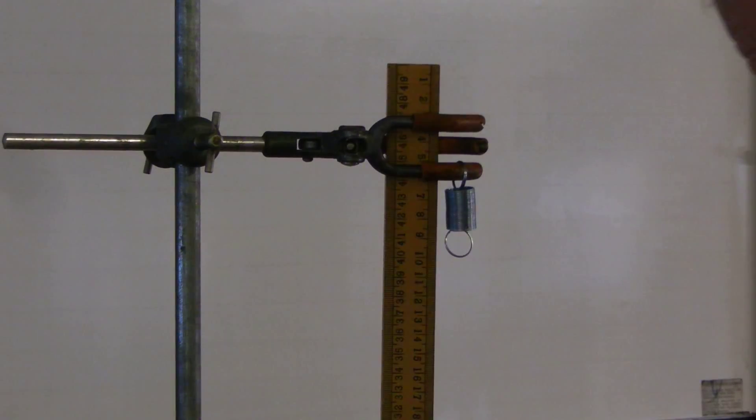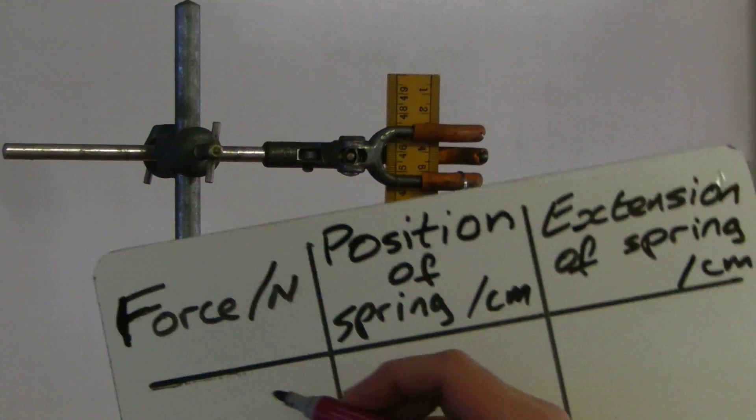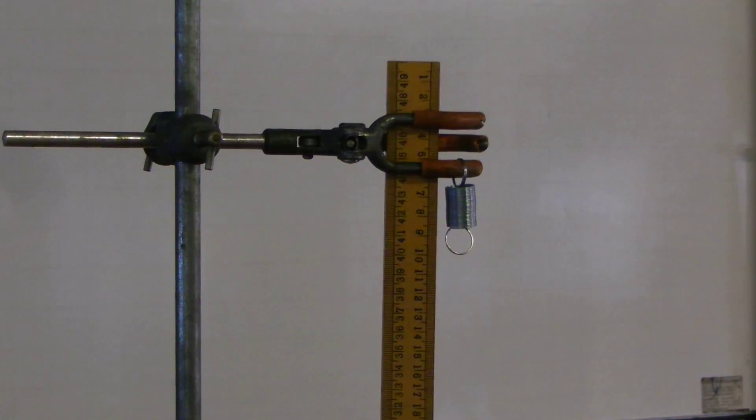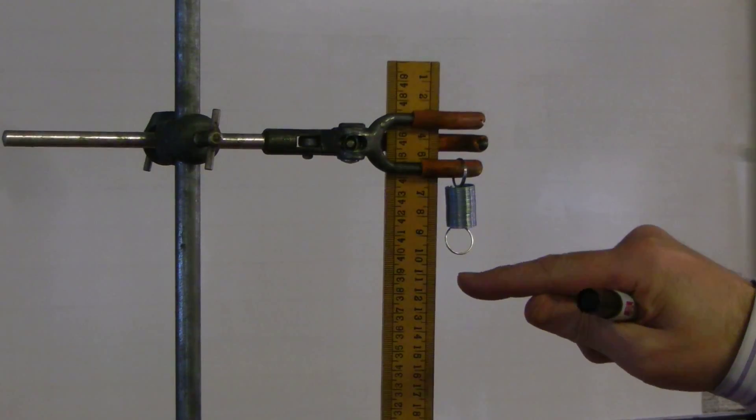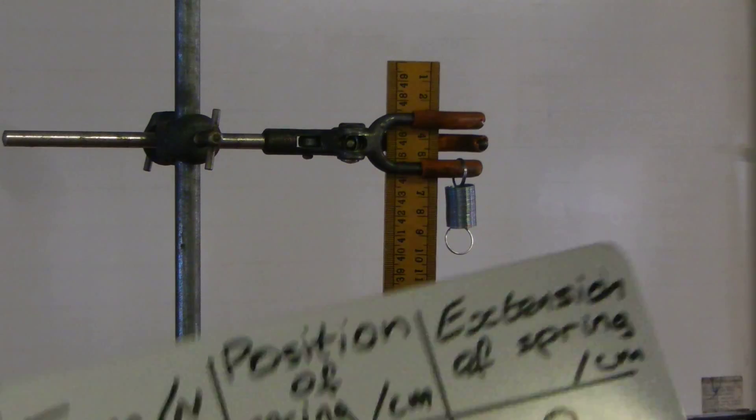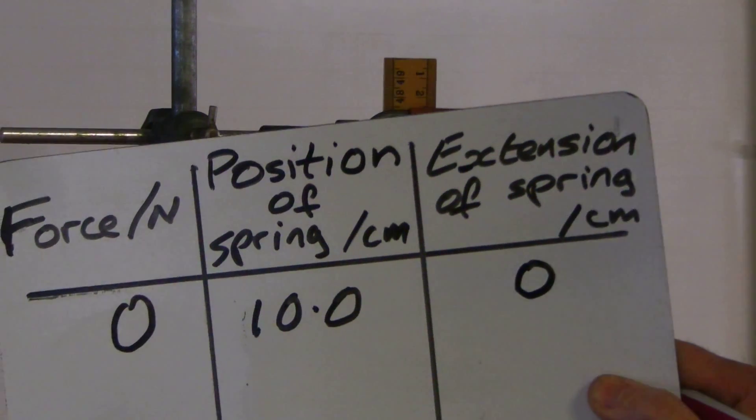And initially, at the moment, without any force added, I will have 0 newtons as my first reading. The position of the spring, of the bottom of the spring, the very lowest point—it's important to always measure to the same point on the spring—that is at 10 centimetres. And my initial extension of the spring is 0. Obviously, with no force, it is not extended.